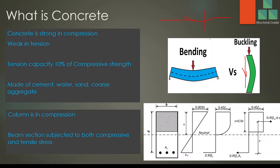In such cases, the column capacity is based on both the concrete compressive stress and the rebar stress — both combined take the stresses. There are different methods to evaluate the capacity, and we consider both these capacities when evaluating the capacity of the column.